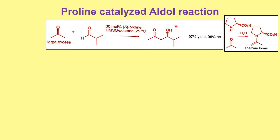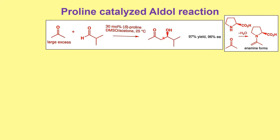Now, how do we predict the stereochemical outcome? Once the enamine is formed, the aldehyde approaches the enamine. The reaction proceeds via a six-membered Zimmermann-Traxler transition state. If you haven't watched my videos on the Zimmermann-Traxler transition state of the aldol condensation, I highly recommend those videos, where I clearly explain how to draw the transition state — which group should be pseudo-equatorial, which should be pseudo-axial, and which cases are more stable. The carboxylic group of proline is coming out of the plane.